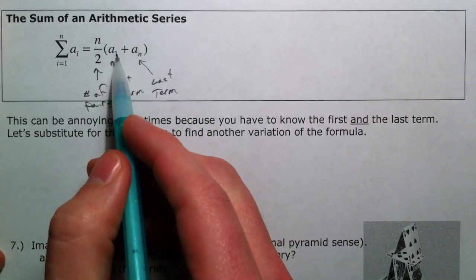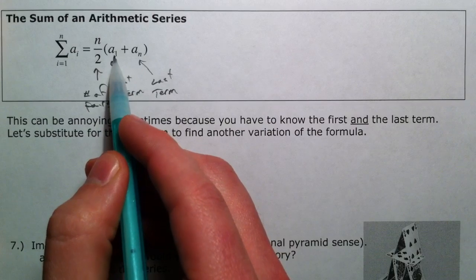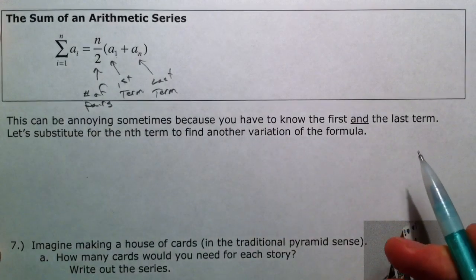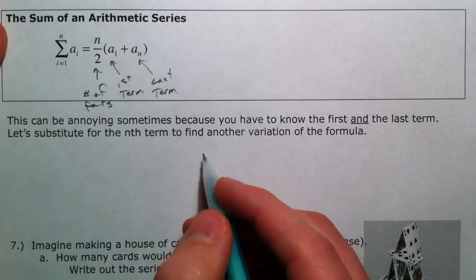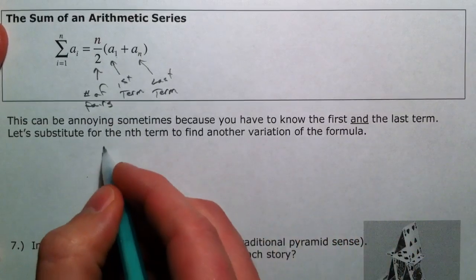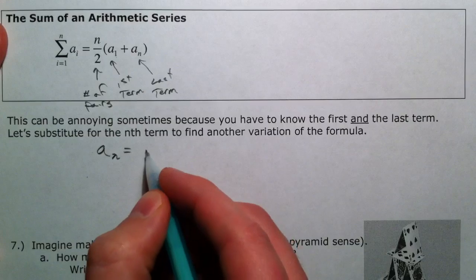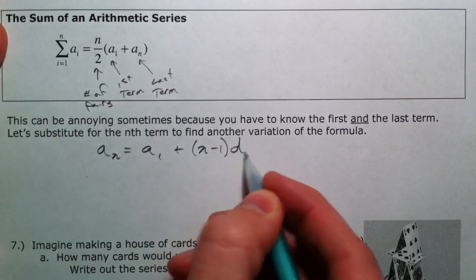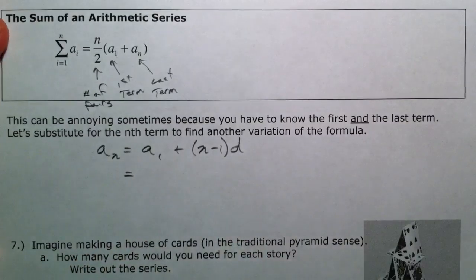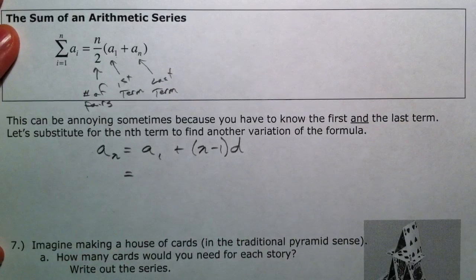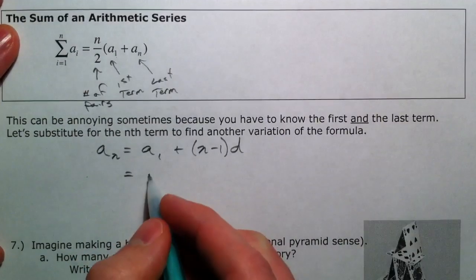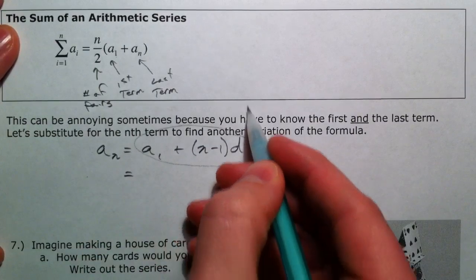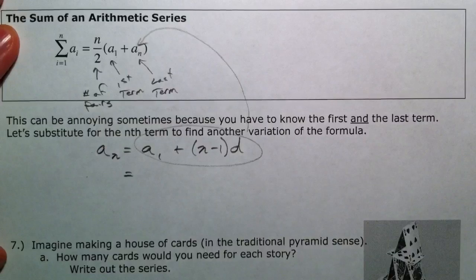Sometimes it's annoying to have an equation that's solely based on knowing the first one and the last one, and so what if you don't know the last term? Well, we came from an equation for the nth term where we had our first term plus n minus 1 times d. And so, let's take this and plug it in for a sub n.